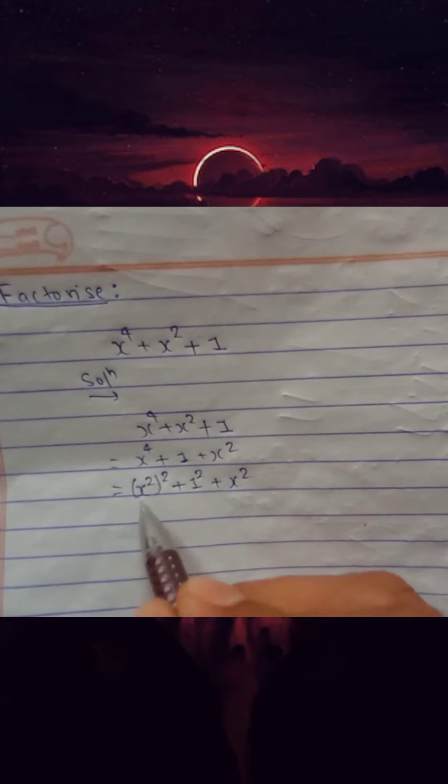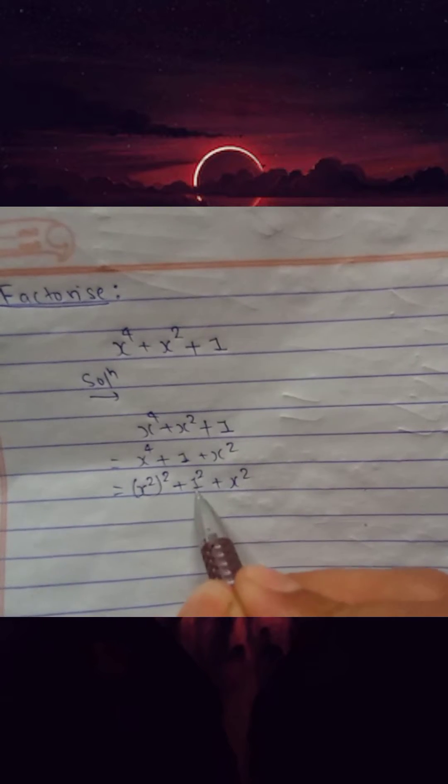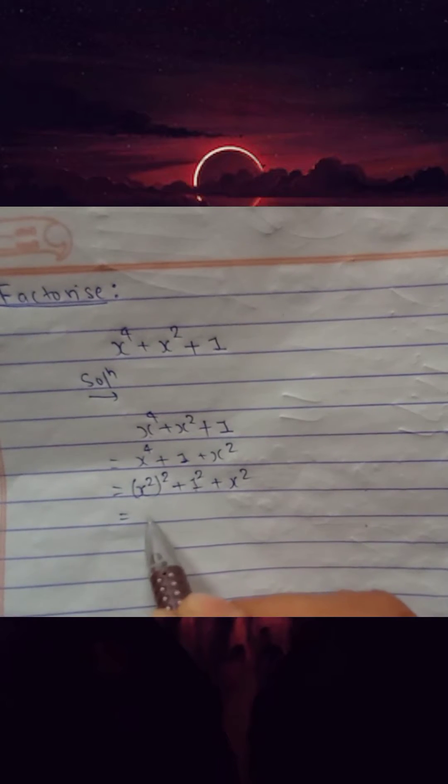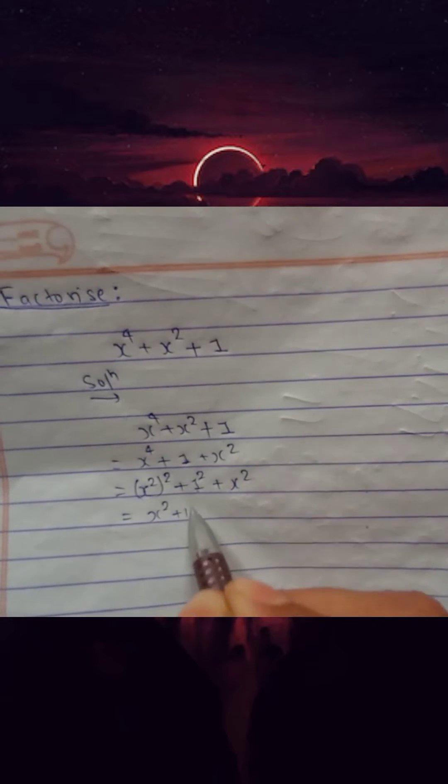If you suppose x square as a and 1 as b, then you can use your formula a square plus b square. So use the formula a square plus b square, that is a plus b.